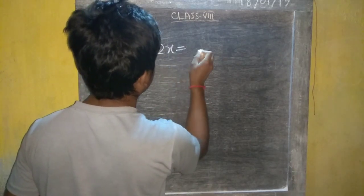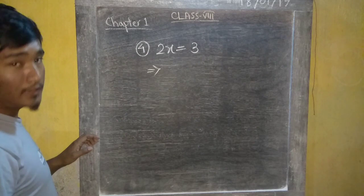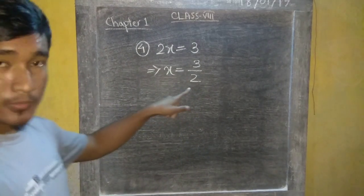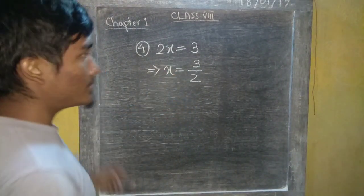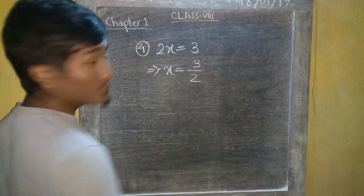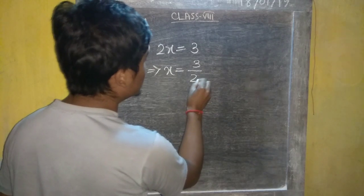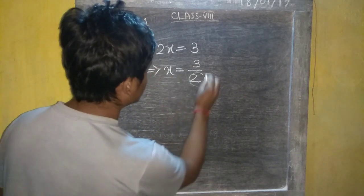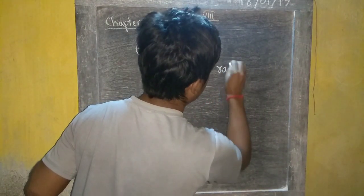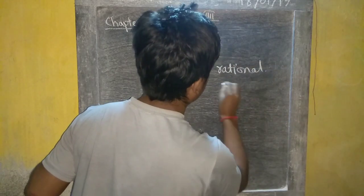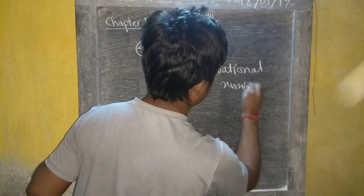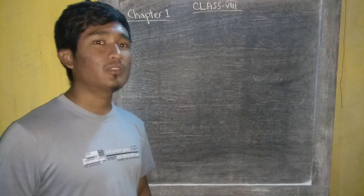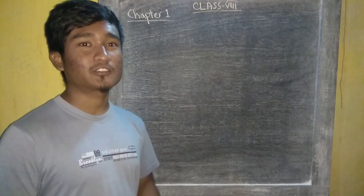Example 4: x equals 3 by 2, which is a fraction in the form P by Q, where 3 and 2 are integers and Q is not equal to 0. So x is a rational number. Rational number properties and problems will be discussed in the next video. Thank you.